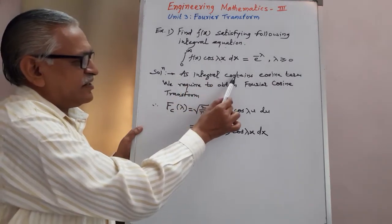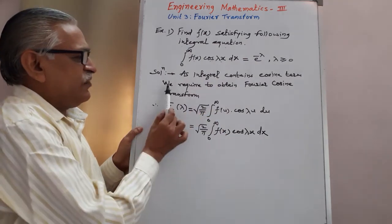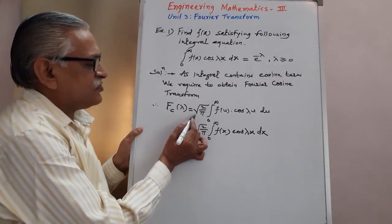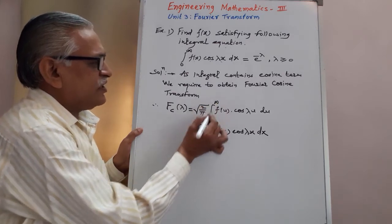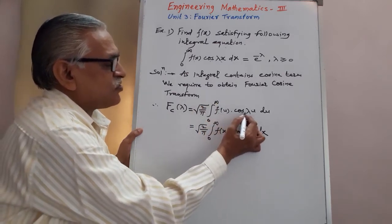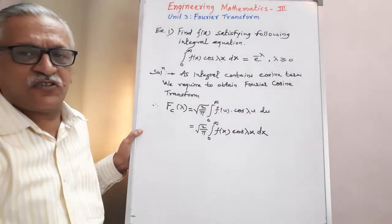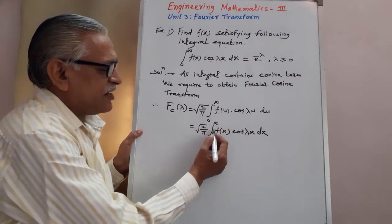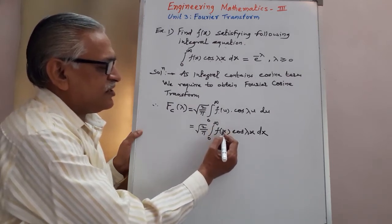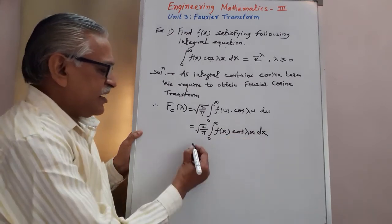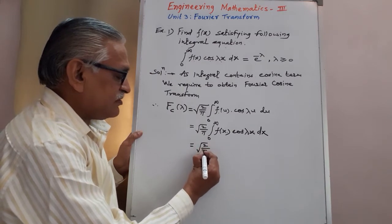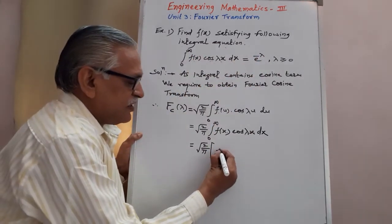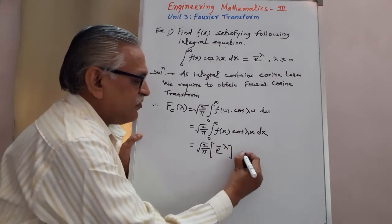As this integral contains the cosine term cos of lambda x, we require to obtain the Fourier cosine transform, which is given by fc(lambda) equals root(2/pi) times integration from zero to infinity of f(u) cos(lambda u) du. Since a definite integral does not depend upon the variable, I can replace u by x. Therefore this integral can be written as integration from zero to infinity of f(x) cos(lambda x) dx, which equals root(2/pi) times e raised to minus lambda, as given. We call this equation 1.